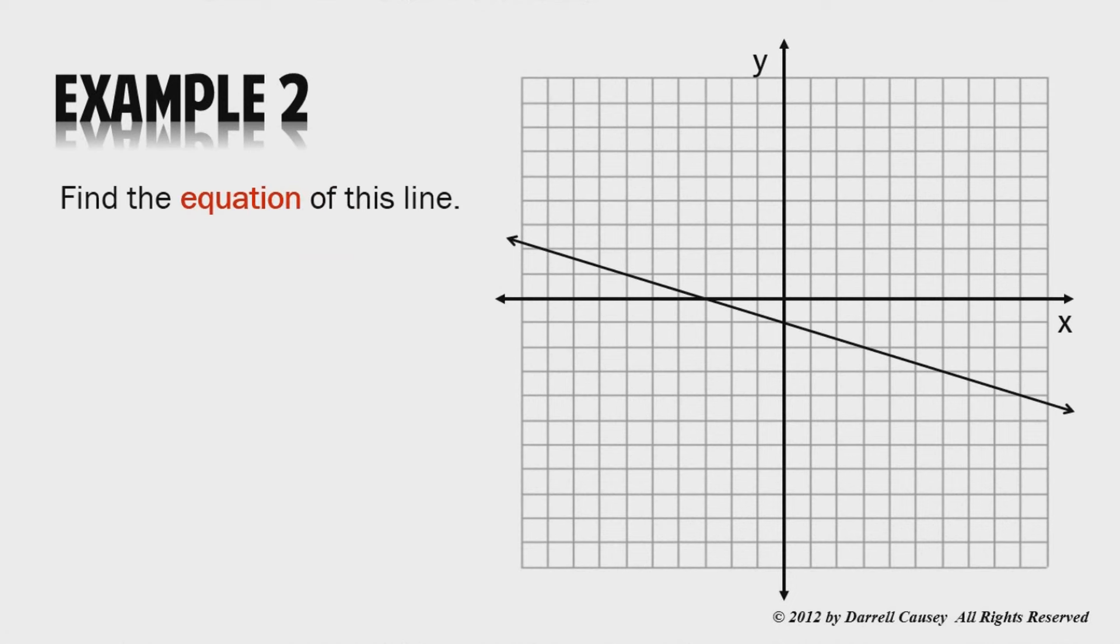Example 2. Find the equation of this line. Well, we need a plan. So first, choose two points. Next, find the slope. Then, find the y-intercept. And finally, write the equation in slope-intercept form.